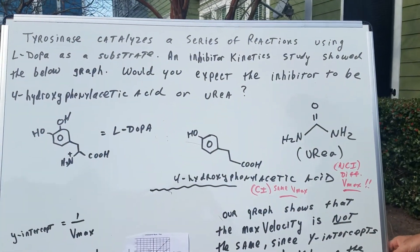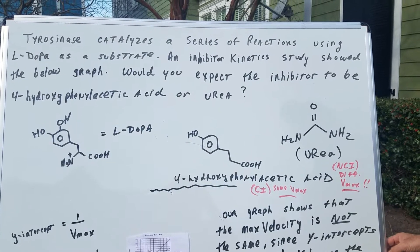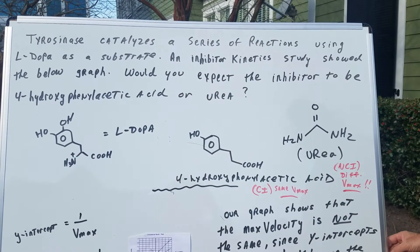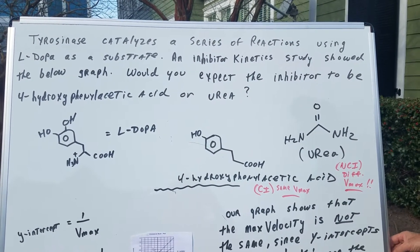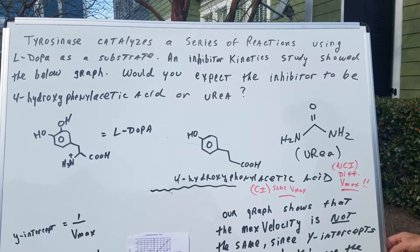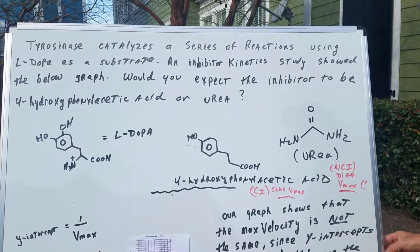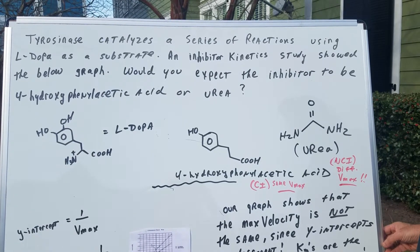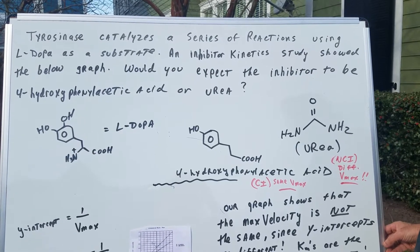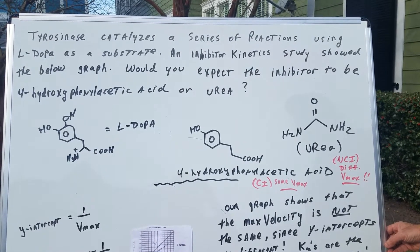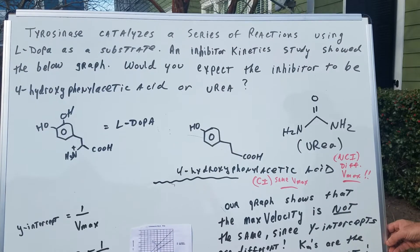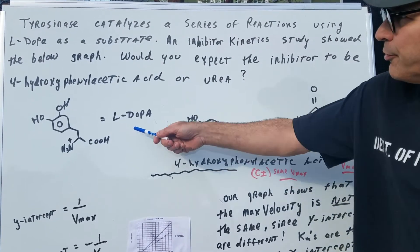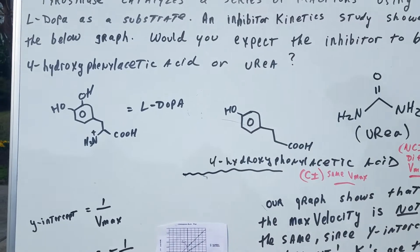Tyrosinase catalyzes a series of reactions using L-DOPA as a substrate. An inhibitokinetic study showed the graph below, which I'll be showing you in a few minutes. Would you expect the inhibitor to be 4-hydroxyphenylacetic acid or urea? I'm going to give you the structures. There's L-DOPA — that's our substrate.